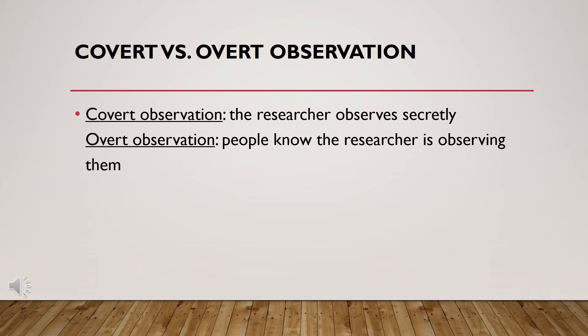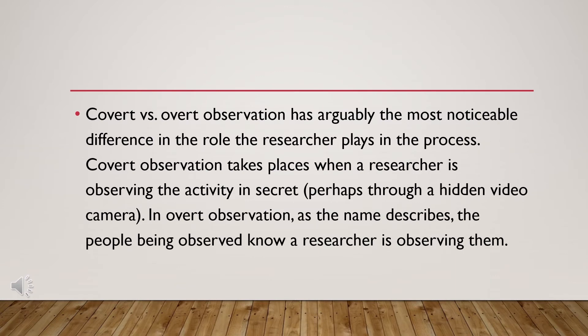Here are examples of different kinds of observation. First, we have covert versus overt observation. In covert observation, the researcher observes secretly, while in overt observation, people know the researcher is observing them. Covert observation takes place when a researcher is observing the activity in secret, perhaps through a hidden video camera. In overt observation, as the name describes, the people being observed know a researcher is observing them.